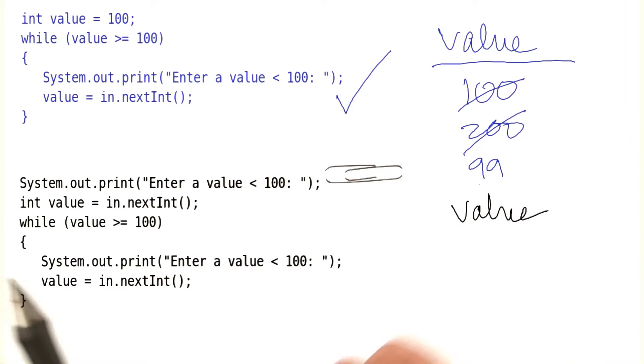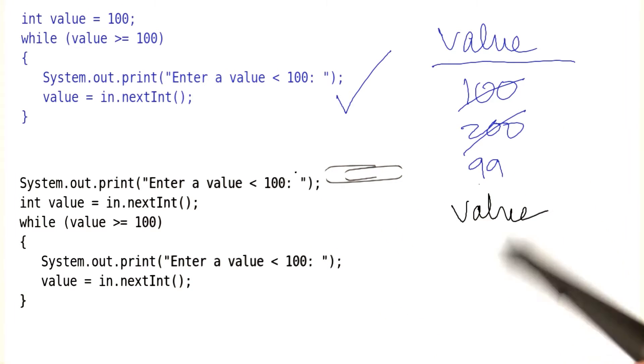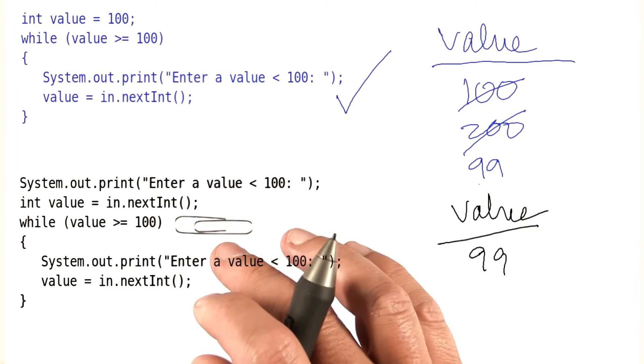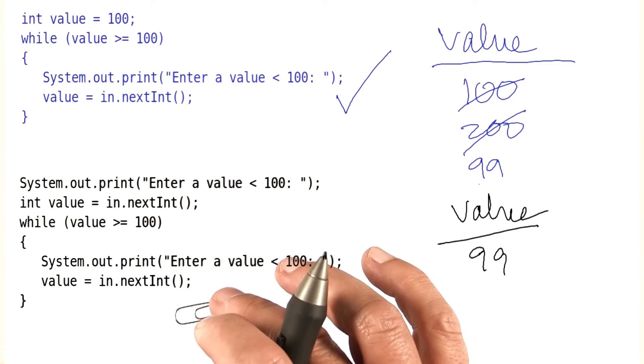Now let's look at the black solution. This one is a little different. We ask the user to enter a value less than 100, and let's say they do. Then now comes the loop. This loop is never entered, and in this case, we get the right behavior.